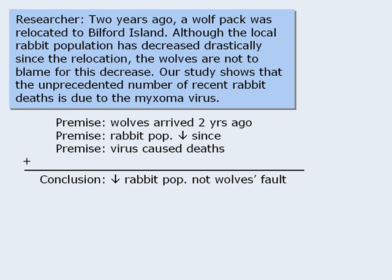Can you identify any assumptions necessary to draw the conclusion? It might be difficult to spot one here, and that's okay. We're told the virus caused the deaths, but can we naturally conclude that the wolves are not to blame? Not really — perhaps the wolves brought the virus to the island, or their actions caused the virus to flourish, making them partially responsible. So an unstated assumption is that the wolves did not somehow contribute to the existence of the virus on the island — which is necessary for the conclusion to follow from the premises.